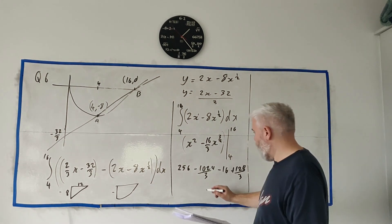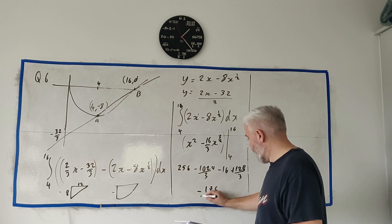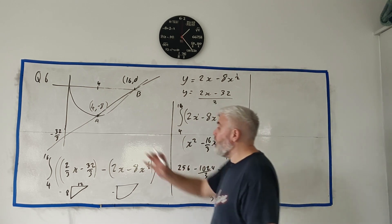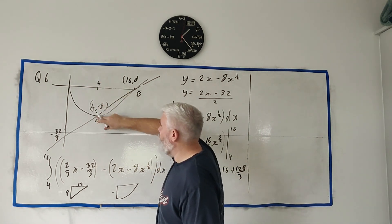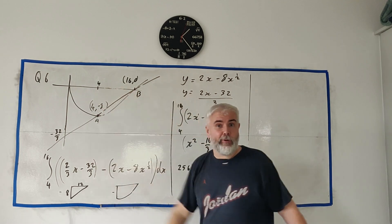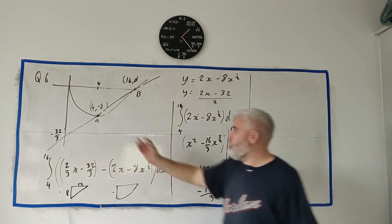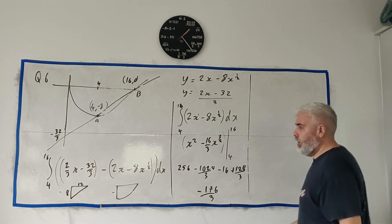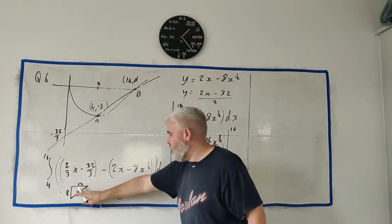And put all that together and we'll get minus 176 over 3. But remember we know we're looking for an area. So obviously the minus we can turn it to a positive. It's just a minus because we're below the x-axis. So really what we're looking for is this triangle.